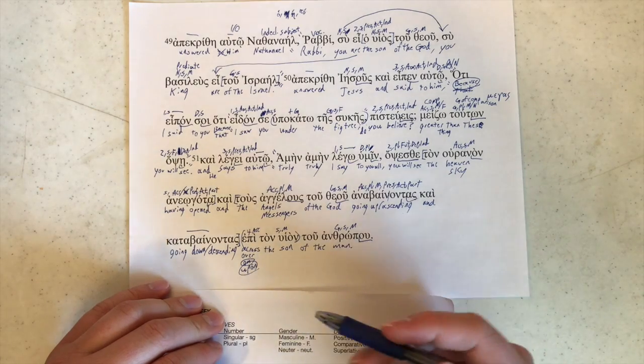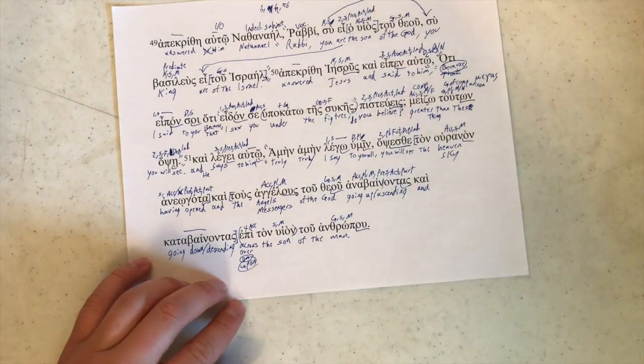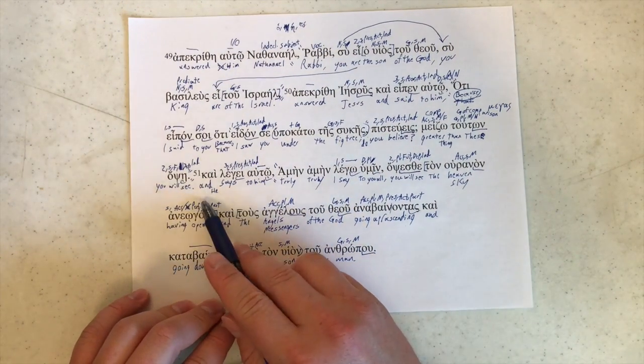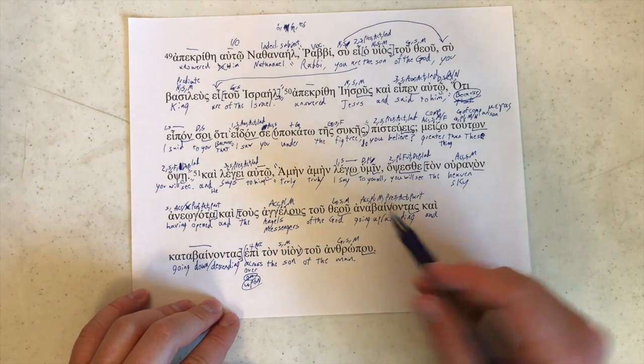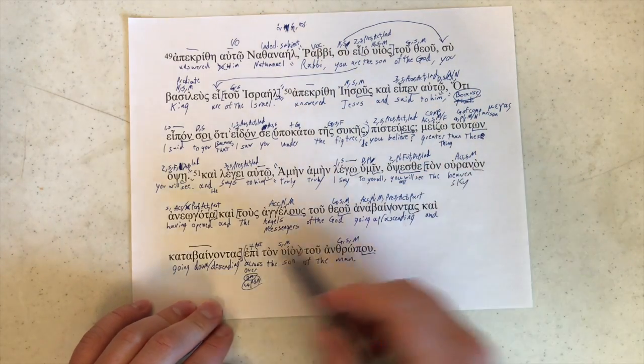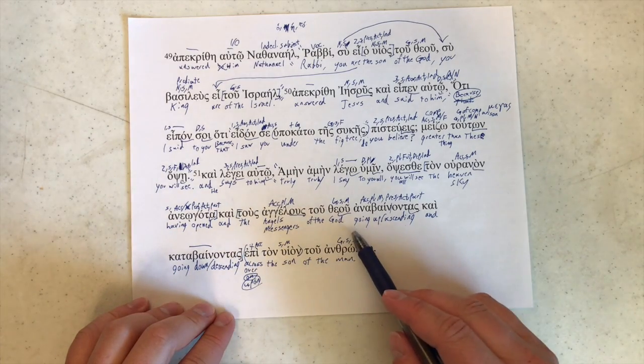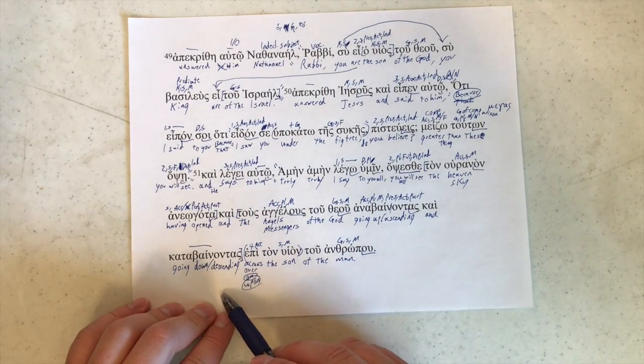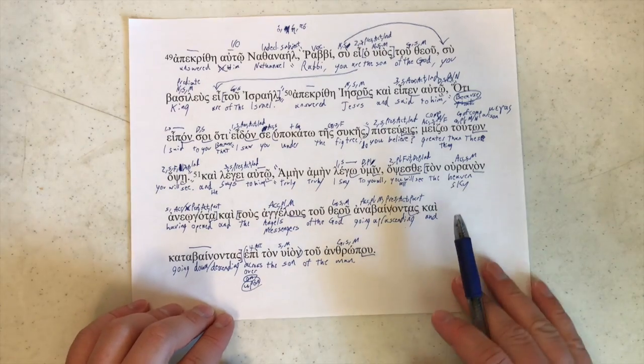That is all of verse 51. Go ahead and take a look at it in its own context. And he says to him, truly, truly I say to you all, you all will see the heaven or sky having opened and the angels or messengers of the god going up, ascending and descending on the son of the man. And there we go.